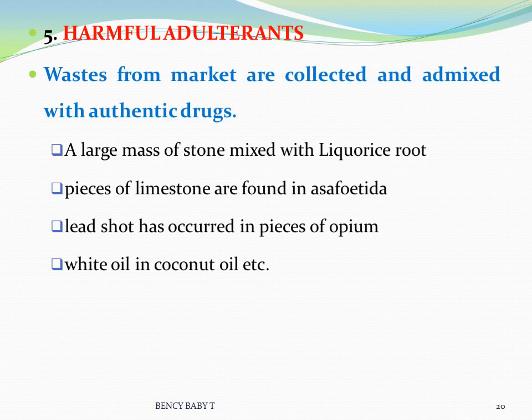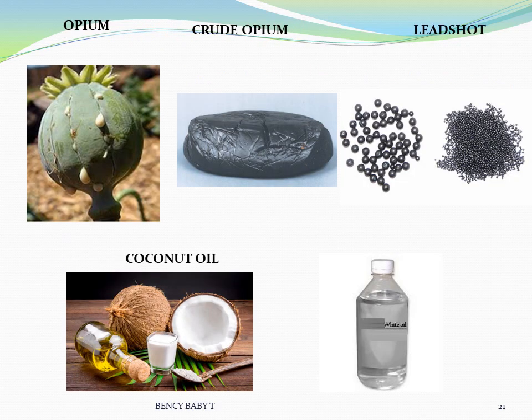The fifth method involves harmful adulterants. Wastes from the market are collected and admixed with authentic drugs, which may lead to serious health problems. Examples include large masses of stone mixed with liquorice root, pieces of limestone found in drugs, and mineral or white oil used in place of original coconut oil.